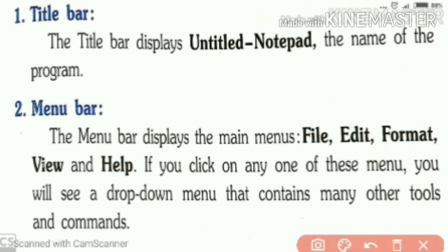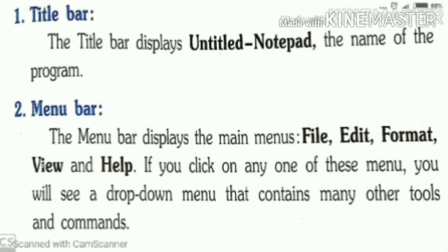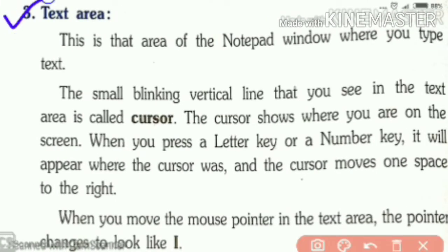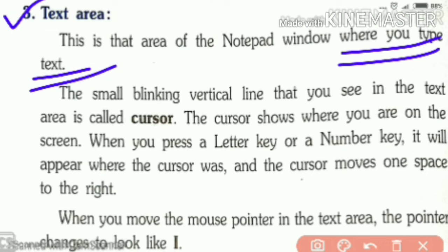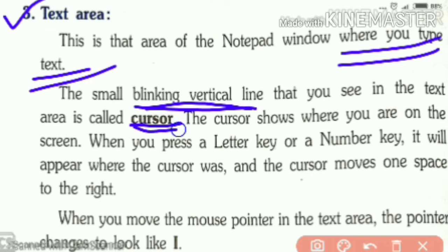In the title bar, it will show the name of the program. In the menu bar, it will display the main menus such as File, Edit, Format, View, and Help. Third, the text area — this is the area of the Notepad window where you type text. That blank area where you are typing any sentence is called the text area. The small blinking vertical line you see in the text area is called the cursor.